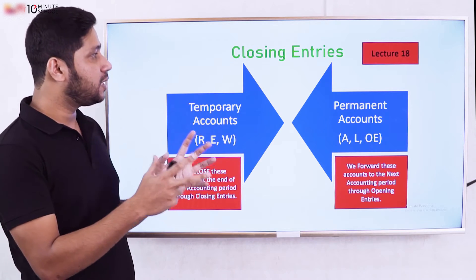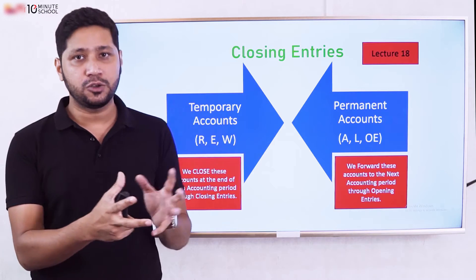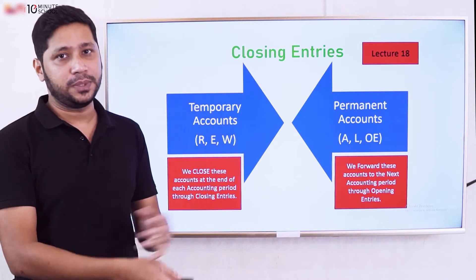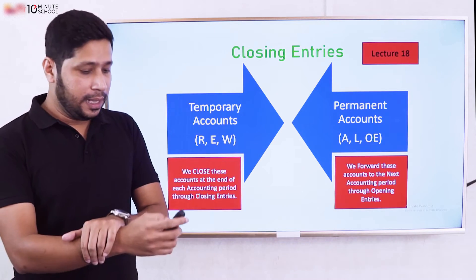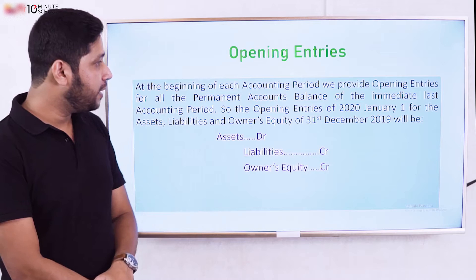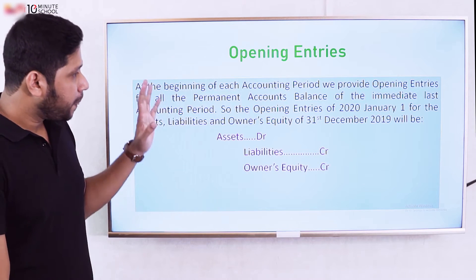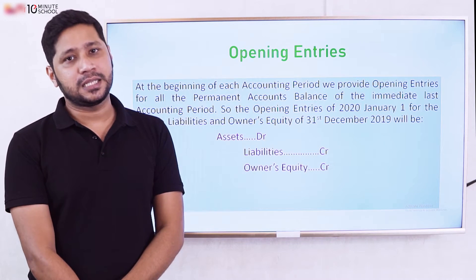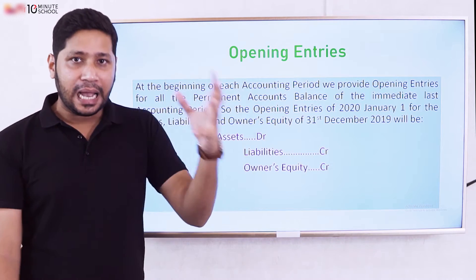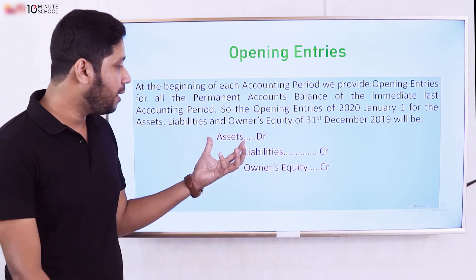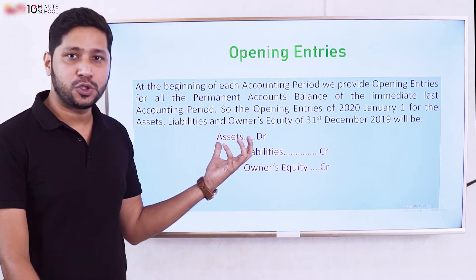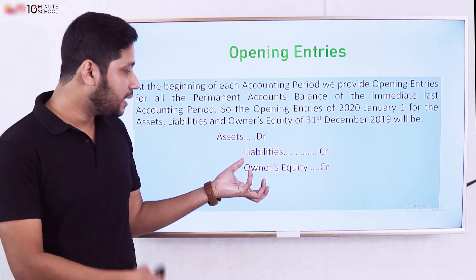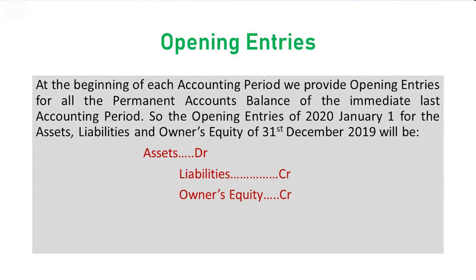Basically, closing entries zero out the temporary accounts. When opening entries are made for the next period, asset accounts are debited, and liabilities and owner's equity accounts are credited, carrying their balances forward.